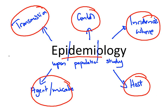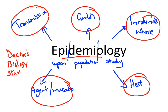Epidemiologists are often doctors. They use the study of biology to help them solve these problems. And they often will use statistics — a branch of mathematics which deals with patterns and probability — in order to help them study all of these problems. Epidemiology, epidemiologist.